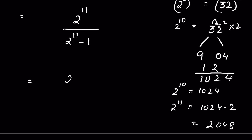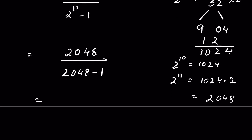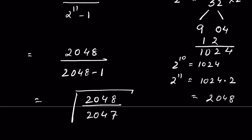So we can write 2048 upon (2048 − 1), which is 2048 upon 2047. That is our answer without using a calculator. How did you solve it? Let me know in the comment section. Thanks for watching.